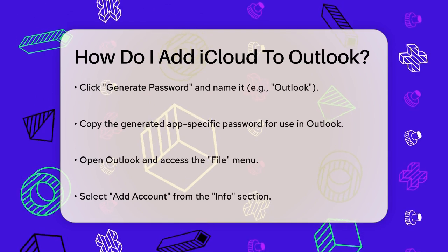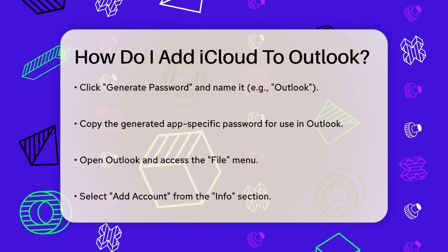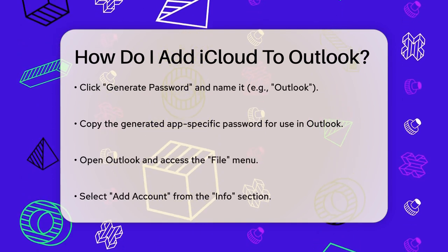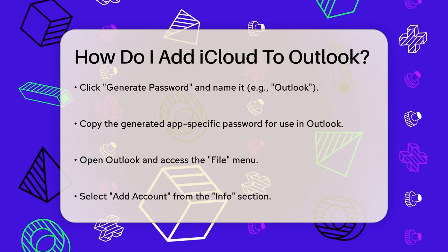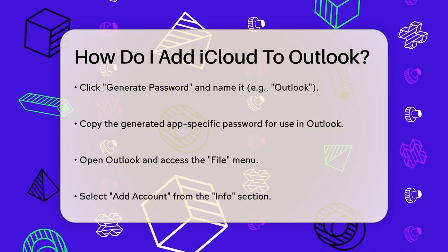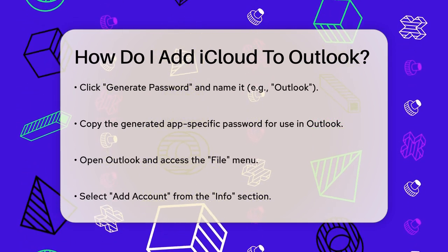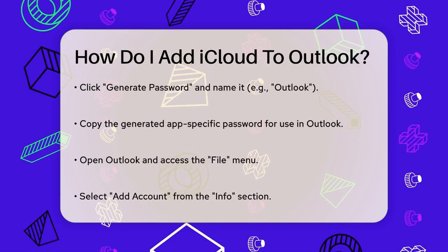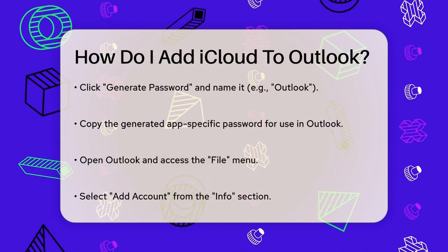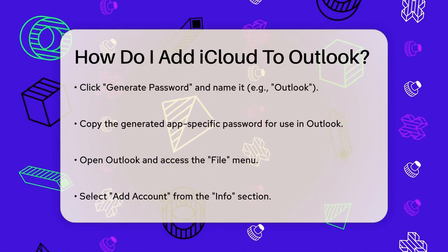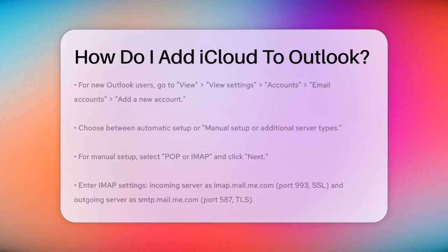Now open Outlook on your system. Click on the File menu and select Add Account from the Info section. If you're using the new Outlook, you might need to go to the View tab, select View Settings, then Accounts, Email Accounts, and finally Add a New Account.